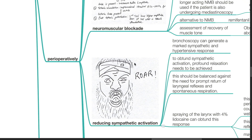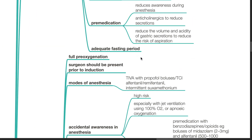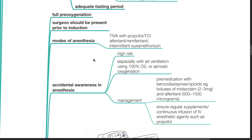Perioperative management: full pre-oxygenation. The surgeon should be present prior to induction. Modes of anesthesia include TIVA with propofol, TCI alfentanil or remifentanil with intermittent suxamethonium. There is high risk for accidental awareness, especially with jet ventilation using 100% oxygen or apneic oxygenation. Pre-medication with benzodiazepines or opioids such as midazolam 2-3 mg and alfentanil 500-1000 mcg. Ensure regular supplements or continuous infusion of IV anesthetic agents such as propofol.